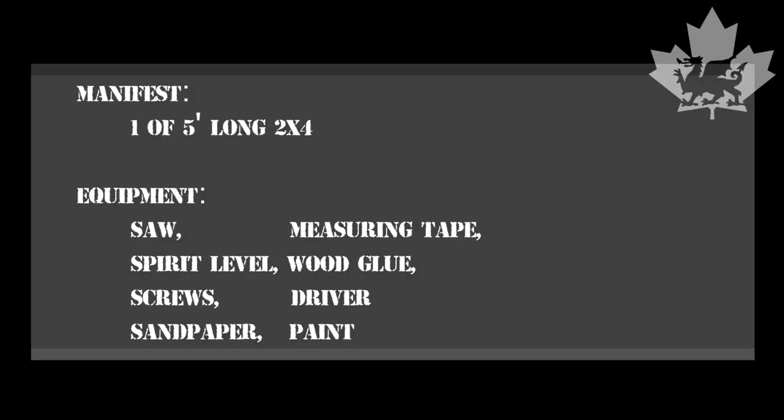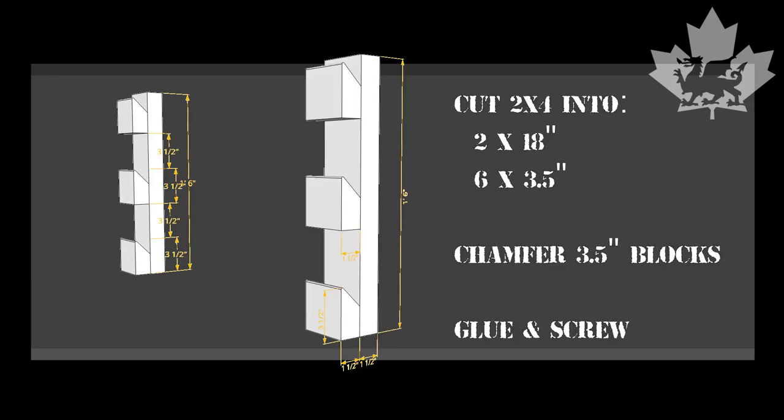We'll need a 5 foot or 60 inch length of 2x4 and some tools to cut, glue and screw. We're going to cut 2 18 inch pieces for the vertical brace and 6 3.5 inch blocks with a 45 degree chamfer to hold the bars. Then, we're going to make them look pretty. Glue, screw, sand and paint.